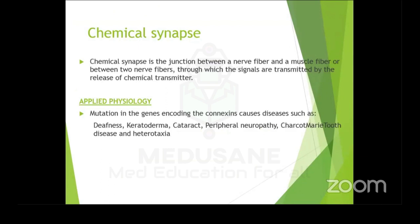Another type of communicating junction is the chemical synapse. A chemical synapse is a junction between a nerve fiber and a muscle fiber, or between two nerve fibers, through which signals are transmitted by means of release of a chemical transmitter. Example: the neuromuscular junction, where acetylcholine is the chemical transmitter released.